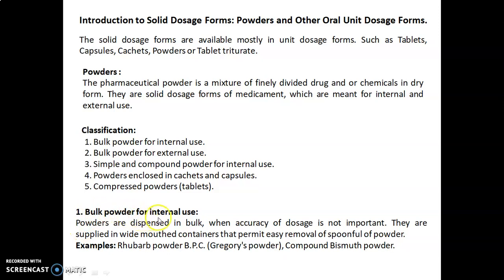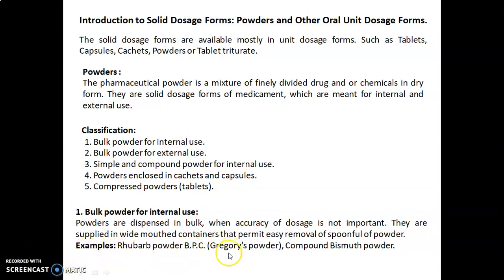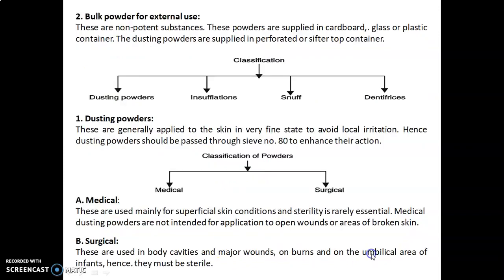Bulk powder for internal use: these powders are dispensed in bulk when accuracy of dosage is not important. They are supplied in wide mouth containers that permit easy removal of a spoonful of powder. Examples are rhubarb powder BPC, known as Gregory's powder, and compound bismuth powder.